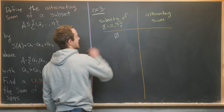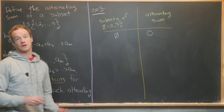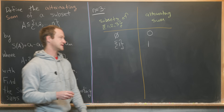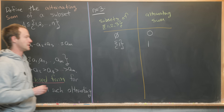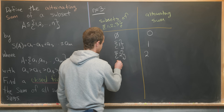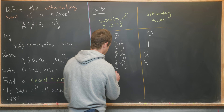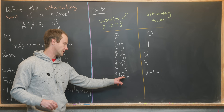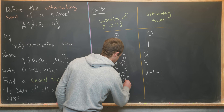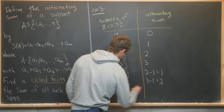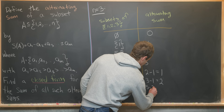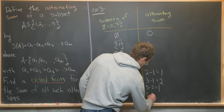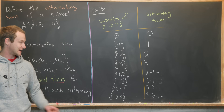Starting with the empty set — the alternating sum is just 0. The singleton {1} gives 1, since we always start with the positive. The singleton {2} gives 2, the singleton {3} gives 3. The set {1, 2} gives 2 minus 1, which equals 1, because we go from largest to smallest. The set {1, 3} gives 3 minus 1, which is 2. The set {2, 3} gives 3 minus 2, which is 1. And finally the whole set {1, 2, 3} gives 3 minus 2 plus 1, which equals 2.